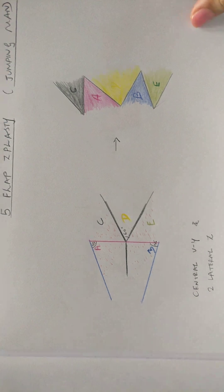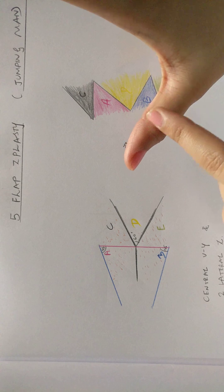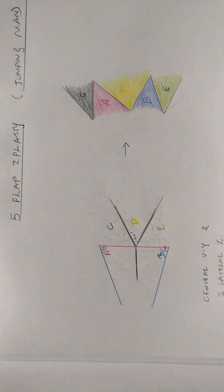This flap that is jumping man flap is conventionally been described for release of these scars that are along the thumb web, and hence they are commonly asked in the examination.